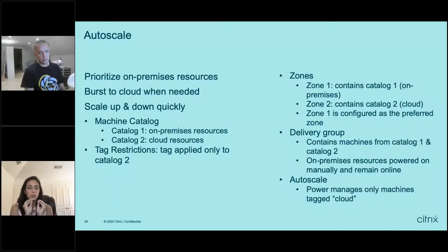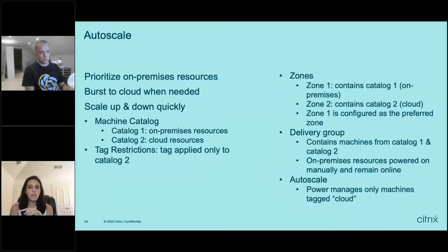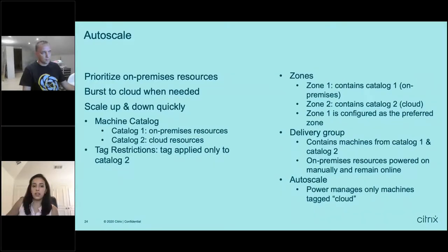Then within your zones, you'd have two zones. Zone one would contain catalog one — your on-premises zone — and zone two would contain catalog two, your cloud zone. You would set zone one as your preferred zone. Then for the delivery group, you would have one delivery group containing machines from both catalogs — machines from catalog one (on-premises) and catalog two (cloud). Your on-premises resources are going to be powered on manually and will remain online, and then Autoscale will only power-manage the machines that are tagged — specifically the machines tagged as cloud.